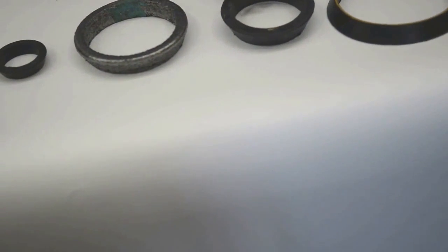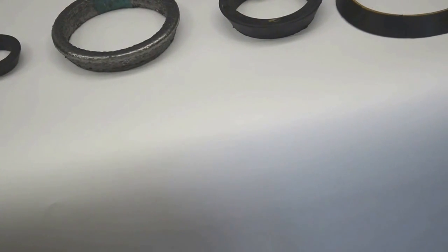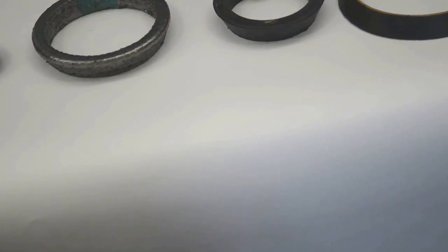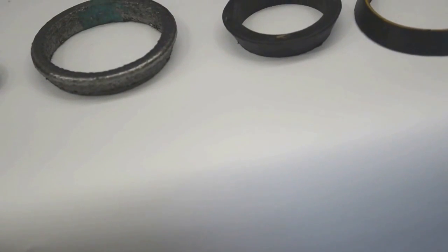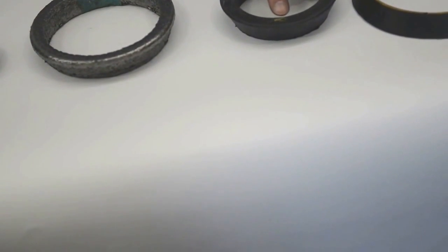Next to that, this is a grade 42 gasket. That's a Buna N gasket for oil service, generally. It's color-coded with a yellow dot.